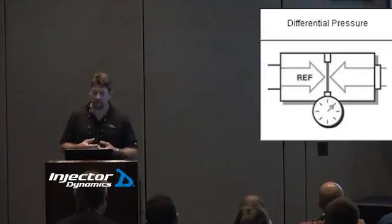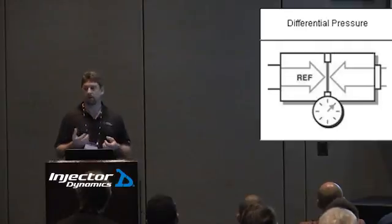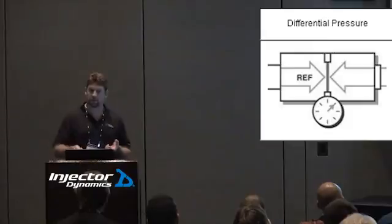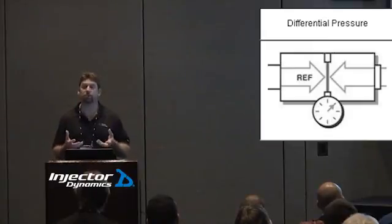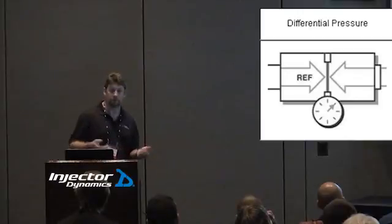So if we have a naturally aspirated car with, say, 40 pounds of pressure in the fuel rail and atmospheric pressure in the manifold because we're at full throttle, the differential pressure across the injector, meaning the difference between the inlet and the outlet, is 40 pounds.